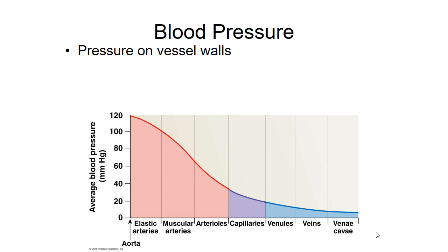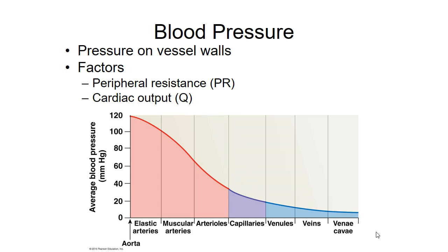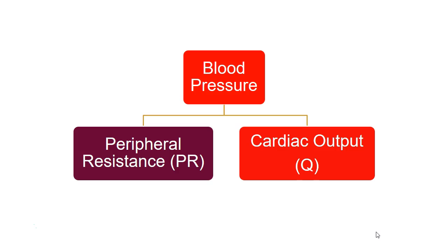Blood pressure on the walls goes down as we go from arterioles to capillaries to venules. So the exchange happens at the capillaries. For a quick recap: blood pressure equals the product of peripheral resistance and cardiac output.